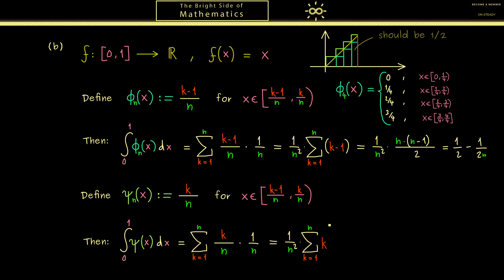This means that we can apply the same formula as before but now we have one additional number at the end. For this reason this sum is then given as n times (n+1) divided by 2. Okay and then in the last step we can simplify this again and we get 1/2 plus 1 over 2n. So with this you should see we've reached our goal.